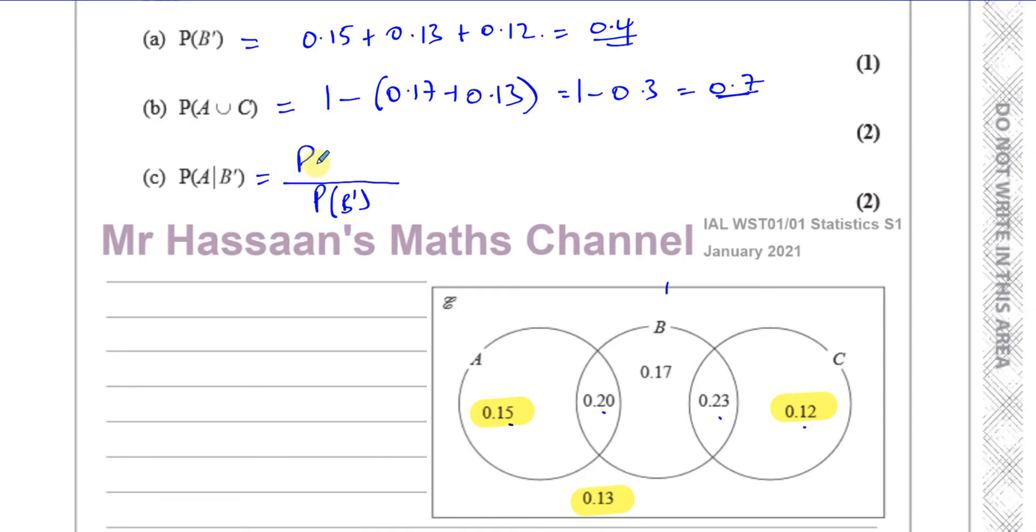I can only look at those three sections there because those are the sections that are outside of B. That's our sample space. And now what I've got to find is the intersection of A and B complement. Because I can only choose the parts of A that are inside B complement. Now, that's only this part here. I'll just circle it. That's the only part of A that is outside of B.